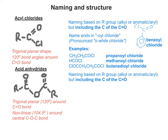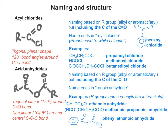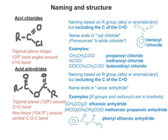Don't forget an aromatic version like benzoyl chloride. For acid anhydrides, the name ends in -anoic anhydride, in the same way as ethanoic acid or propanoic acid. When drawing the structural formula, the R groups and the carbonyls are placed in brackets. If both R groups are identical, as in ethanoic anhydride, you can put one in brackets and write two next to it. If they're different, you have separate brackets, as in methanoic propanoic anhydride — and don't forget aromatic versions like phenyl ethanoic anhydride.